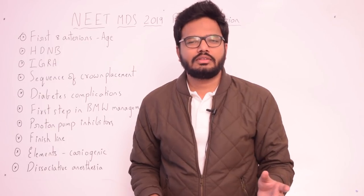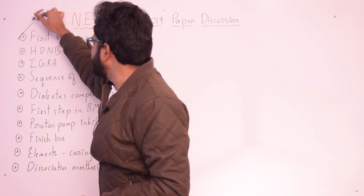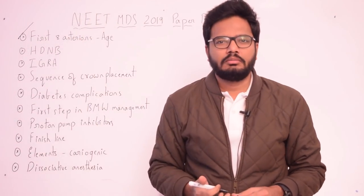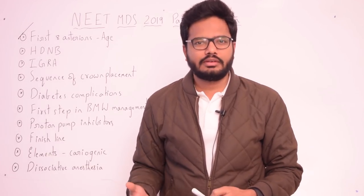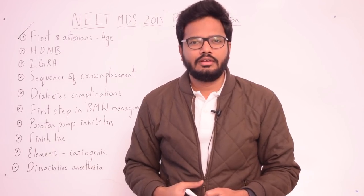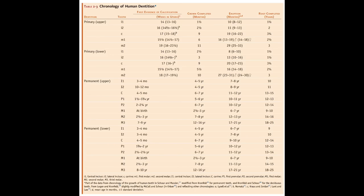In this video, let's start with the next set of questions, beginning with the approximate age of a child when the first eight anterior teeth are present — maxillary central, lateral, mandibular central, and lateral in four quadrants. If you look at the age of eruption: by six to seven years, lower central incisors are erupting; by seven to eight years, lower laterals and upper centrals.